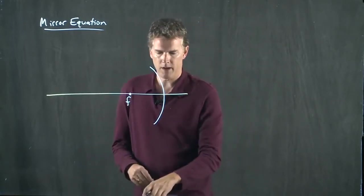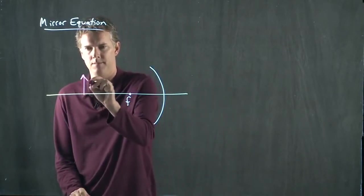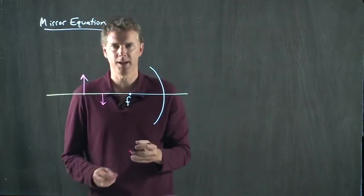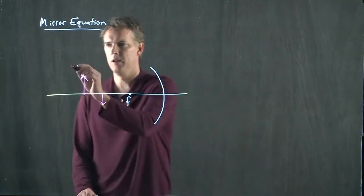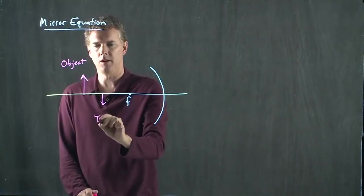And when we have an object, we know that it's going to form some image somewhere. We're not exactly sure where yet. But this thing is our object. This is our image.